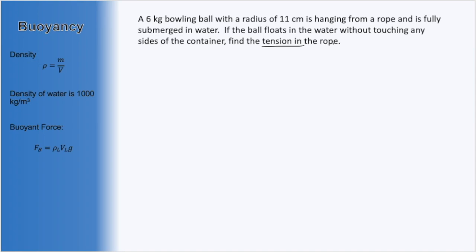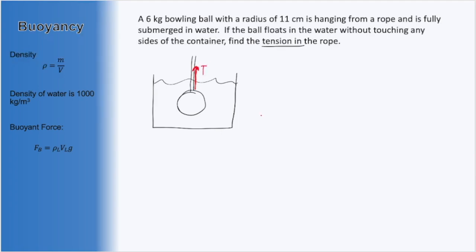So let's draw our diagram. I'll let this be our tank filled with water. There's going to be a bowling ball just floating here without touching any of the sides, which is also hanging from a rope. Since there is a rope holding it up, we know there's going to be some tension directed along that rope. As usual, we are on Earth, so there will be the weight of this bowling ball, which is M times G — labeling the mass as MB. Now that we understand buoyancy, we know there is going to be the buoyant force, FB, which is always directed up out of the liquid.